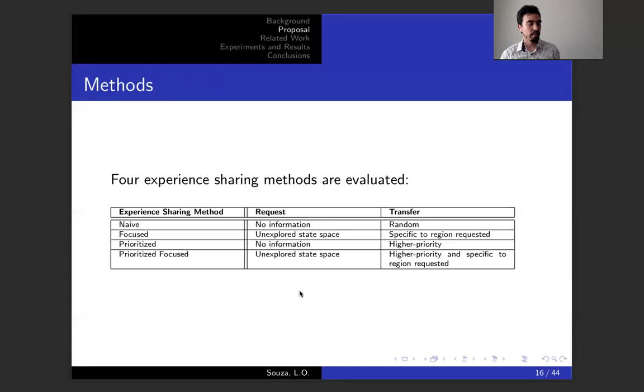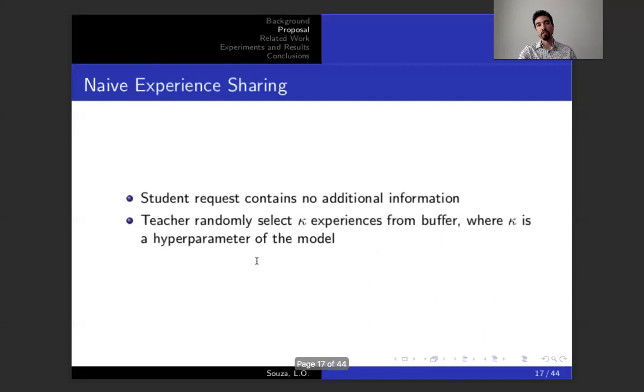We investigated four methods. I'm going to go a little bit more into detail. One is just naive sharing, where we just share a random set of experiences. The other we call focus experience sharing, where each agent sends a request asking only for experiences which belong to part of the state action space the agent hasn't explored yet. A third method we call prioritized ES. The agent who shares experiences only shares the experiences which have high priority on its buffer. And we also have a combined method which combines the priority method with the focus method.